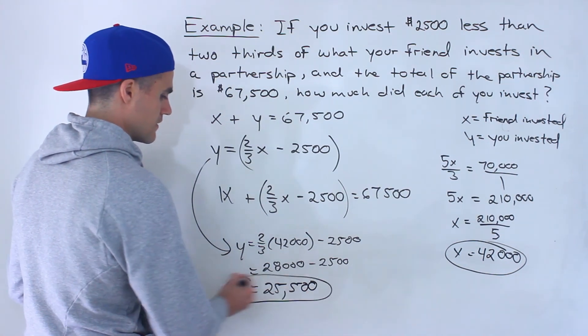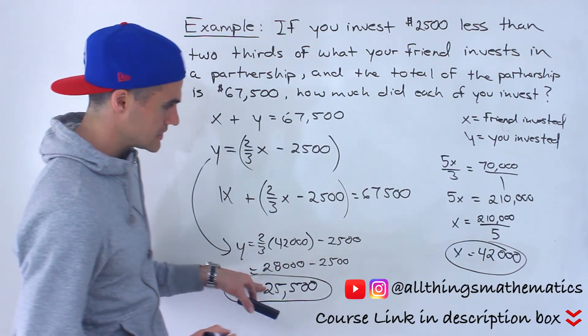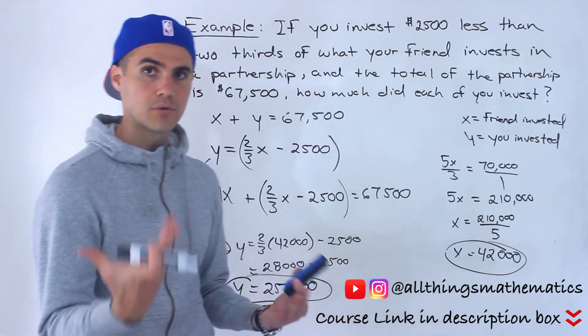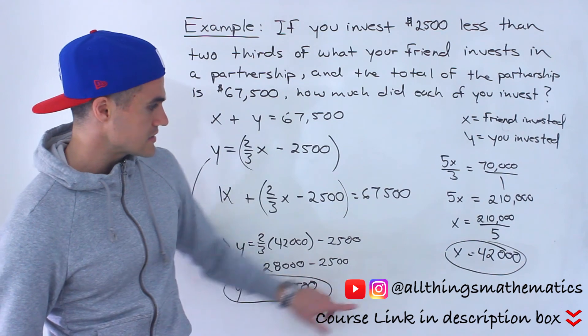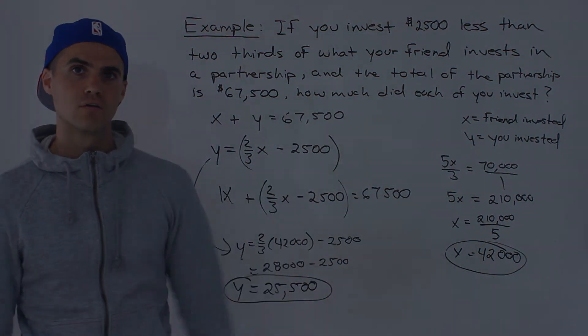So that there is the amount that you invest in. And notice that if we take this, add it to that, we would indeed get $67,500. So that's the amount that you invested. That's the amount that your friend invested.